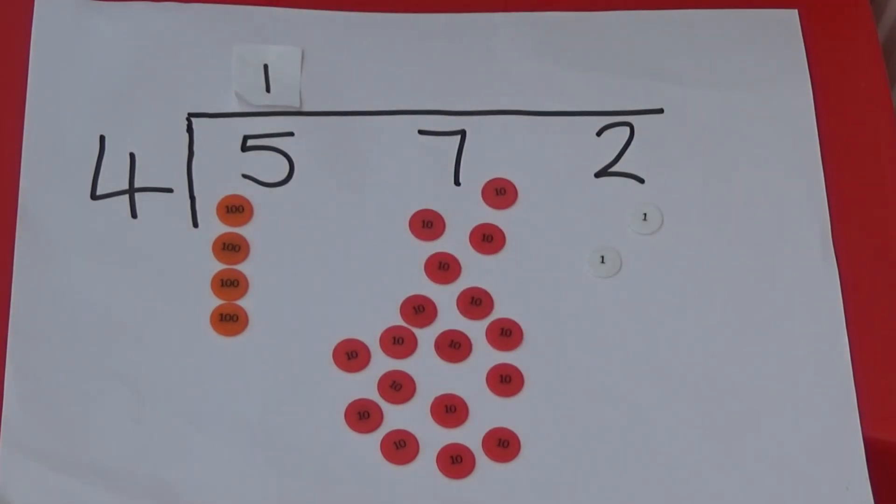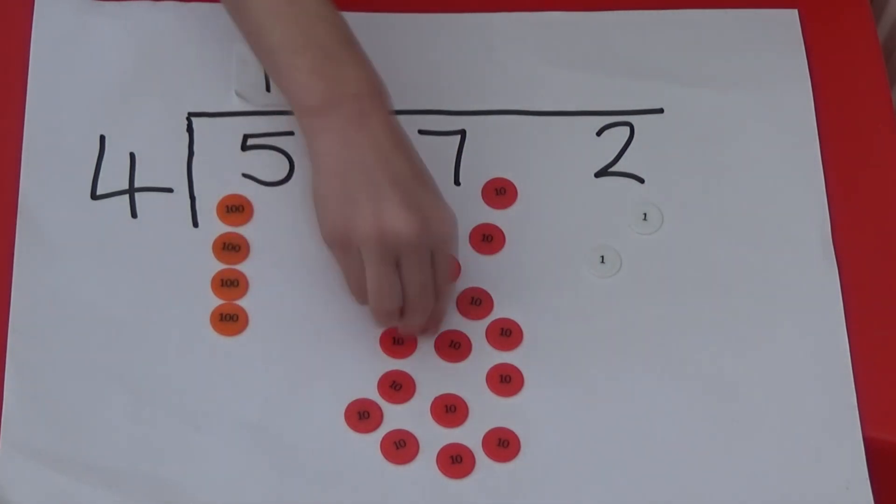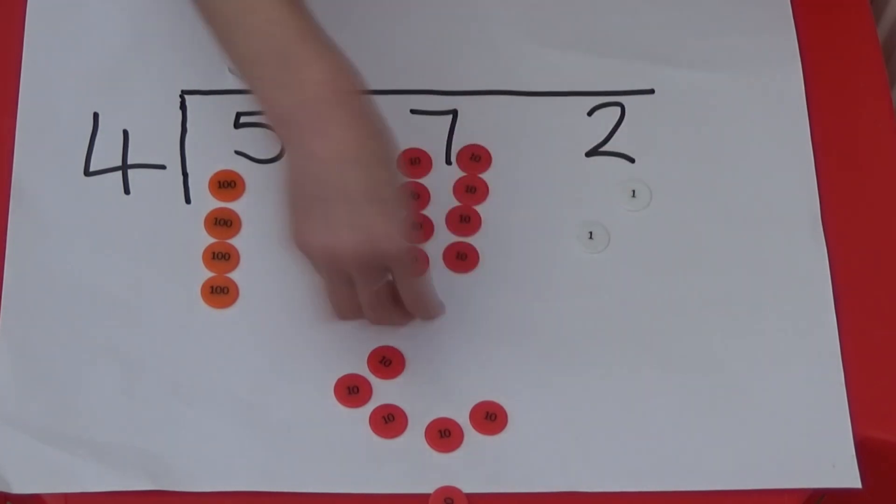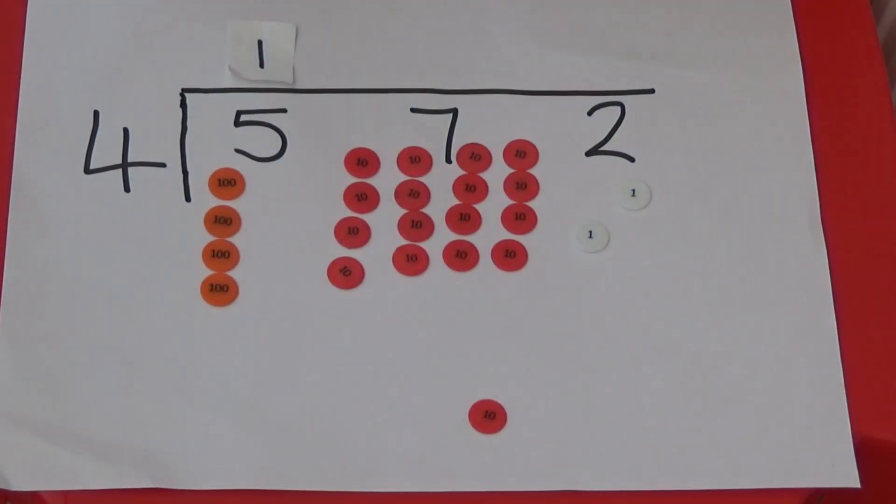We now have seventeen 10s which I am going to put into groups of 4. I have made 4 groups of 4 so I am going to put 4 above the line.